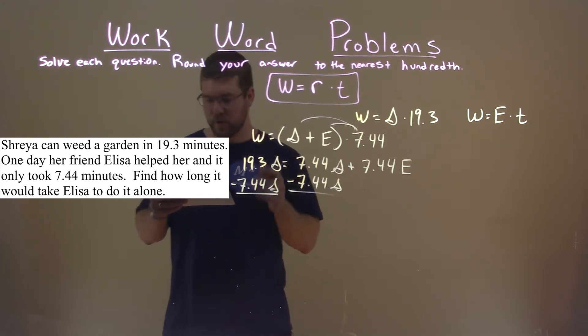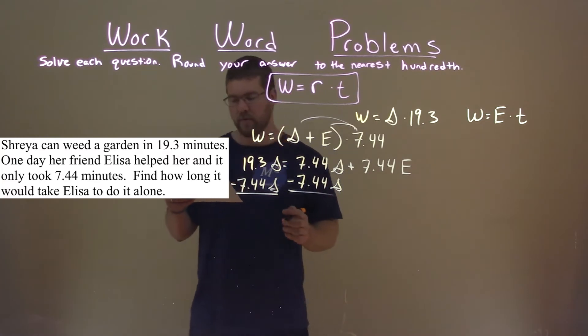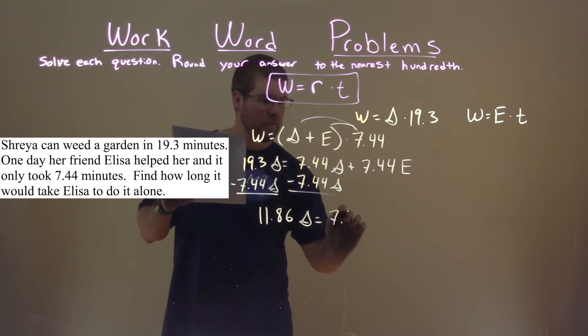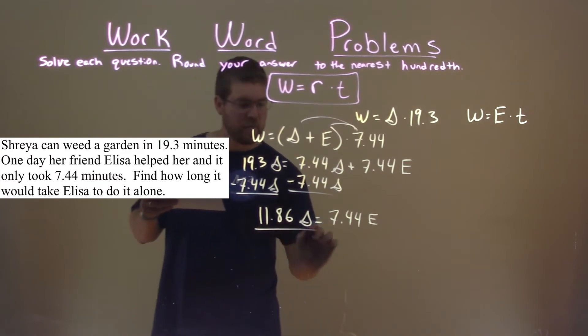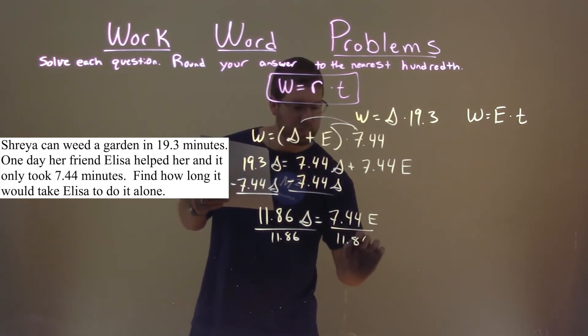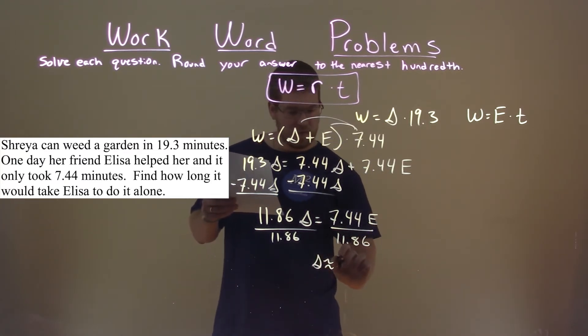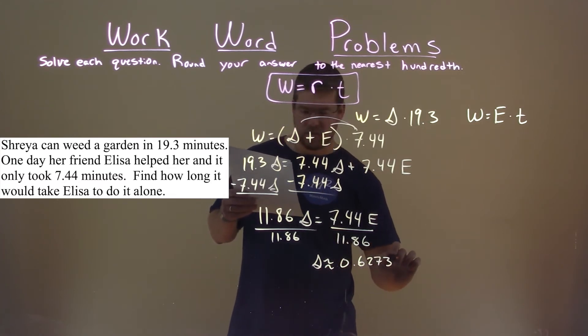And we're left with, well, 19.3 minus 7.44 is 11.86 S, and that's equal to that 7.44 E. Divide both sides by 11.86, and we get the variable S by itself, which is approximately 0.6273 times Eliza's rate.